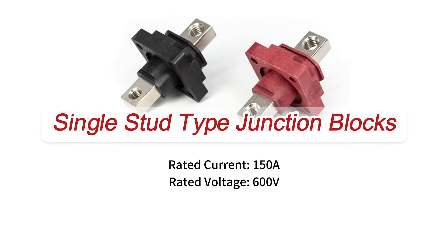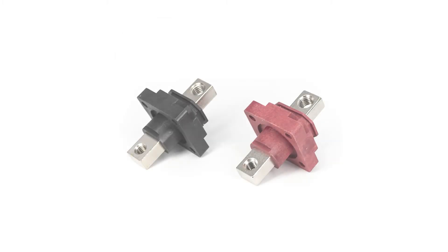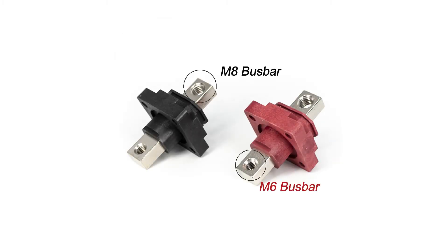This one is the 150A Battery Module Copper Junction Block. Following the wiring points, it is mainly the bus bar. The upper and lower screw diameters are M8 and M6.